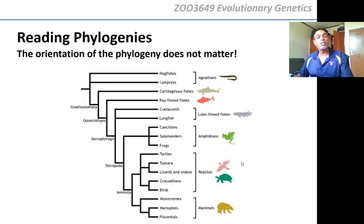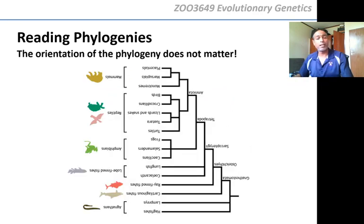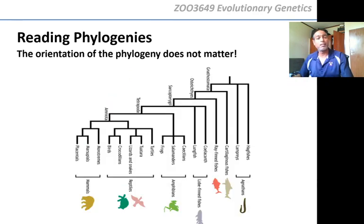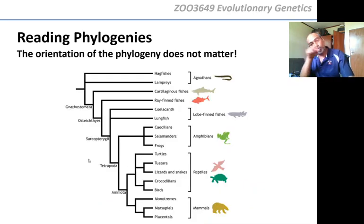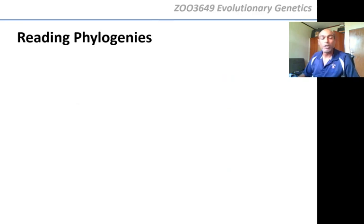So, what about the orientation of the tree? If I made a tree like this and then rotated it — now it's like this, or like that — has that change meant anything? Has the tree changed? It's the same tree, just rotated. You can move that tree around and it does not change anything. Orientation of the phylogeny does not actually matter.